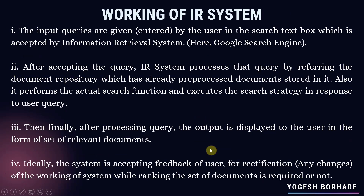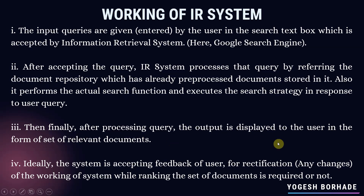Now we'll see the working of the IR system. First, input queries are entered by the user in the search text box and accepted by the IRS, here the Google search engine. After accepting the query, the IR system processes it by referring to the document repository, which has already pre-processed documents stored in it. It performs the actual search function and executes the search strategy in response to user queries. Finally, the output is displayed as a set of relevant documents, and the system accepts user feedback for rectification, checking whether any changes to the ranking of documents are required.